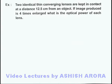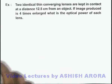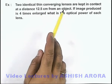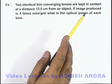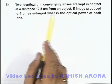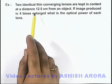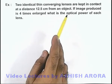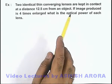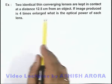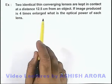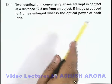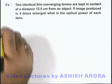In this example, we are given that 2 identical thin converging lenses are kept in contact at a distance of 12.5 centimeters from an object. It is saying if the image produced is 4 times enlarged, we are required to find the optical power of each lens.